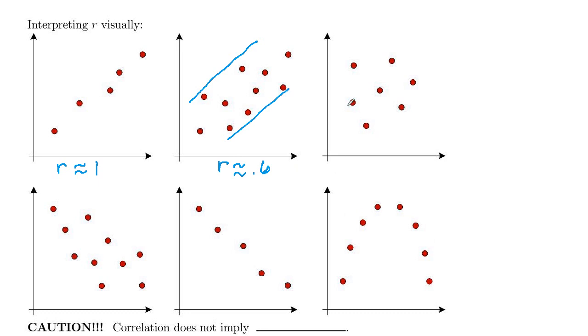And then here, it doesn't look like there's any correlation at all. So here, your R is going to be approximately 0.